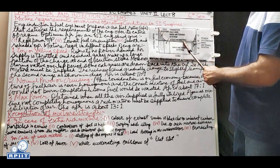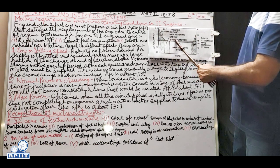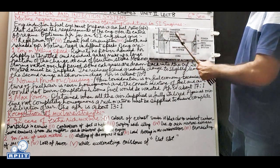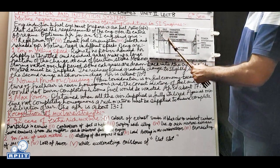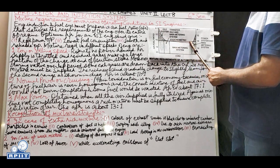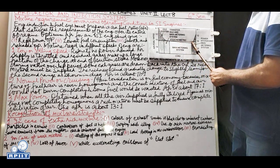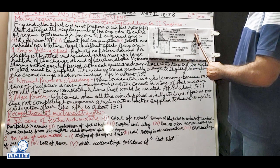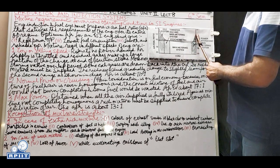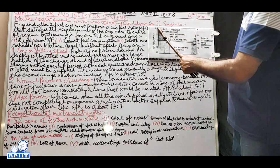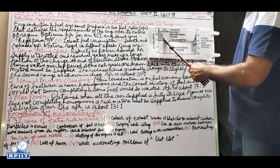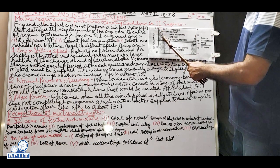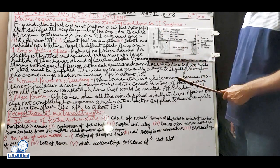The graph shows the AFR coming slightly below stoichiometric for normal operation, then rising back to rich for full power - approximately 11:1. The rich range spans from about 9:1 to around 12-13:1.